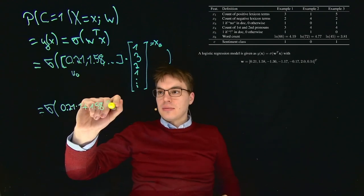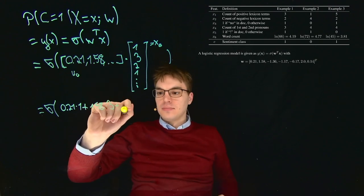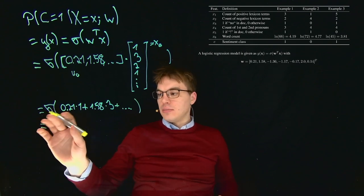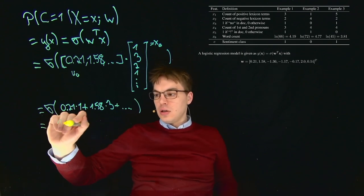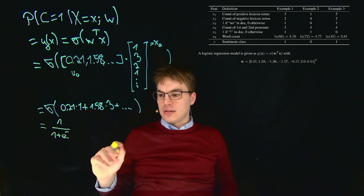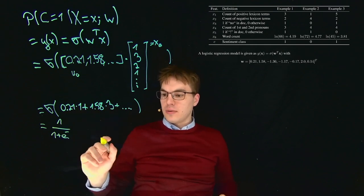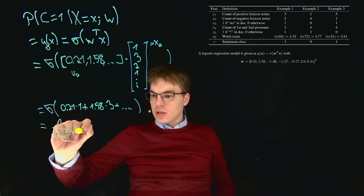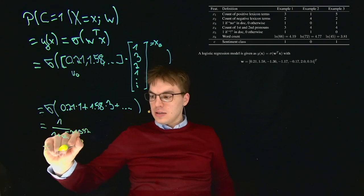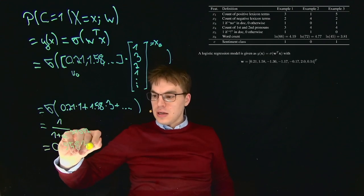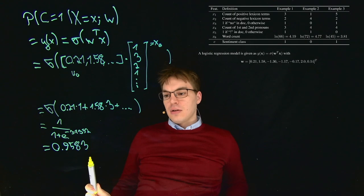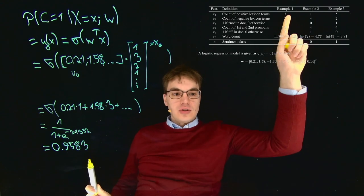Let me continue here: this times that plus this times that and so on. Then we plug this into our calculator and apply this sigmoid function, so 1 divided by 1 plus e to the power of minus the product sum over here, which should be something like 3.1352. Then we get 0.9583.